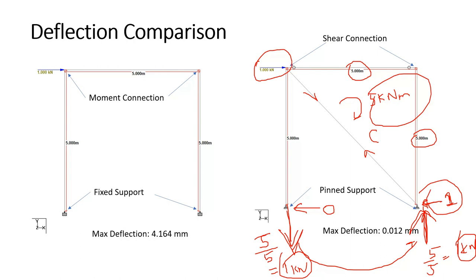If you have two bracings — for example, cross bracing — the shear of 1 kN is distributed equally between both supports: 0.5 kN at each. However, the push-pull forces remain the same at 1 kN and 1 kN. This is how vertical bracing transfers lateral load.